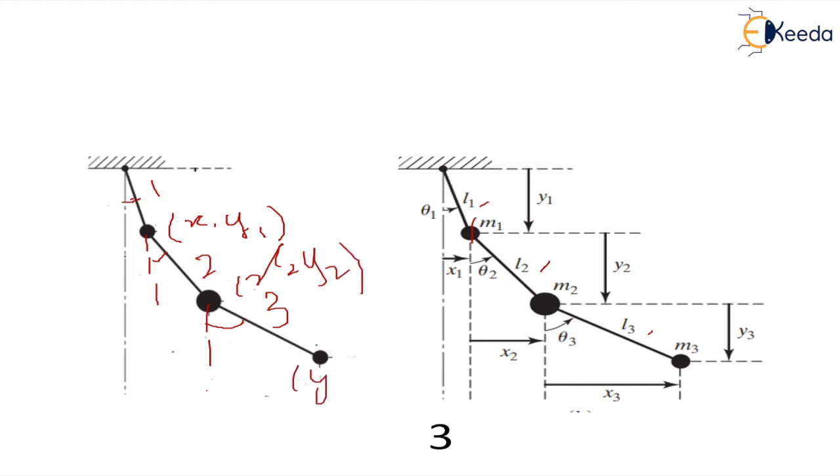So we already know that if we take the case of a single pendulum, to describe the motion of single pendulum we need either angle theta which the pendulum makes with the vertical or one of the coordinates x or y, because x and y they both are not independent coordinates. One has to be dependent on the other coordinate because the condition that x square plus y square actually gives the length of the pendulum.